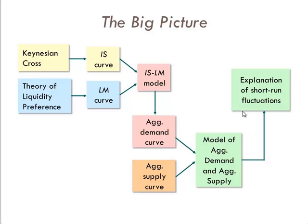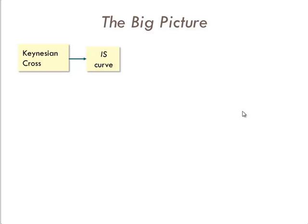We started with the Keynesian cross and now we're going to use it to derive this IS curve. I believe the book tells you what IS stands for - I really don't remember. If you've read the book, you're smarter than me, you know something I don't.